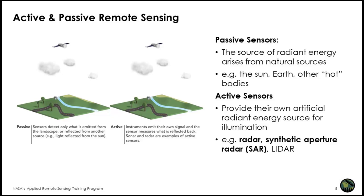Passive sensors measure energy emitted or reflected by the Earth-atmosphere system; examples include optical, thermal, and passive microwave radiometers. Active sensors provide their own illumination source — examples include lidars and radars. A radar is analogous to an ultrasound: an instrument emits a burst of energy (a signal) and measures the portion reflected back. Active remote sensing in the microwave range is called radar remote sensing, and from here we will focus specifically on synthetic aperture radar (SAR).